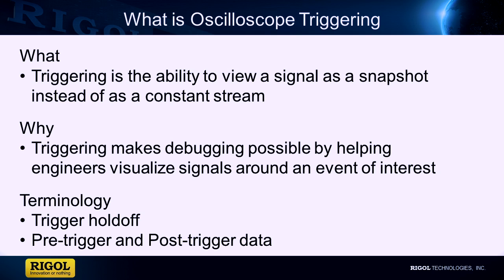Understanding triggering is one of the most important things when learning how to use an oscilloscope. This is even more true on today's digital storage scopes. At its most basic, an oscilloscope monitors voltage over time for each channel or signal connected to it. But in its normal mode, it doesn't just continuously show the most recent voltages. To help the engineer visualize the signal, a scope overlays waveforms from different points in time that share a specific characteristic of interest to the engineer. This characteristic is the trigger event.